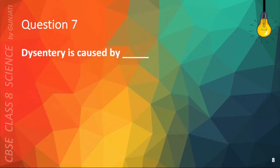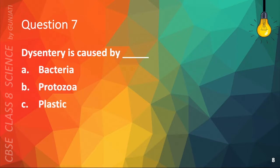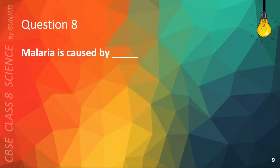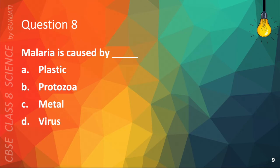Question 7. Dysentery is caused by: A. Bacteria, B. Protozoa, C. Plastic, or D. Metal. The correct answer is B. Protozoa. Question 8. Malaria is caused by: A. Plastic, B. Protozoa, C. Metal, or D. Virus. The correct answer is B. Protozoa.